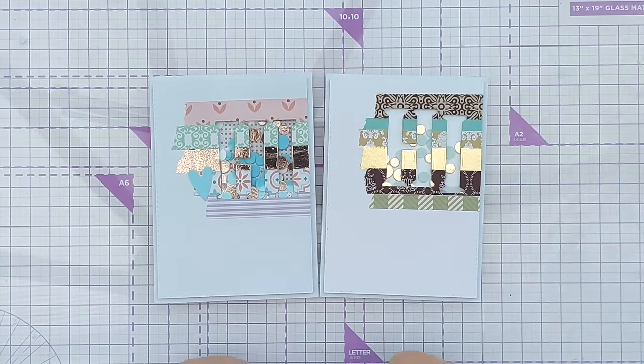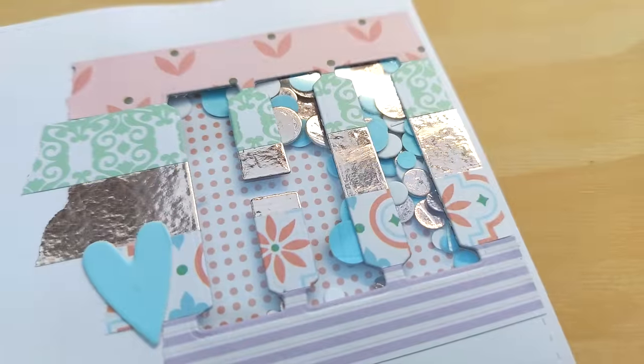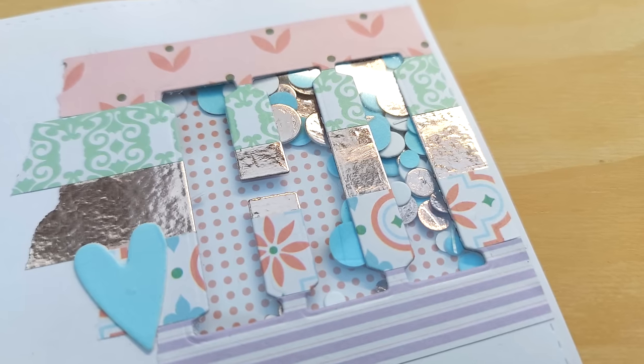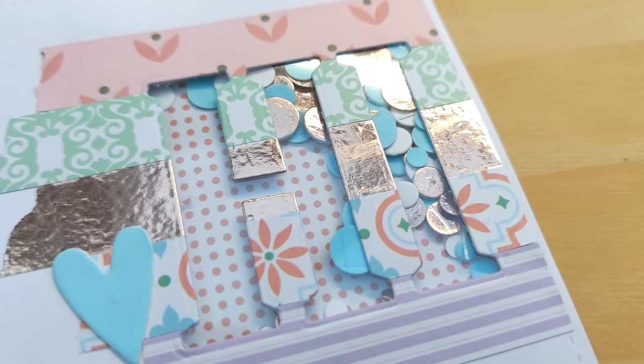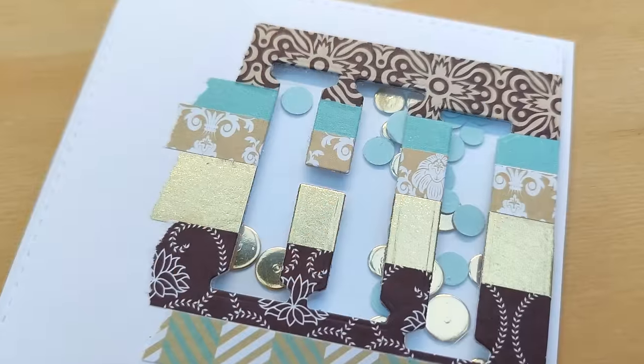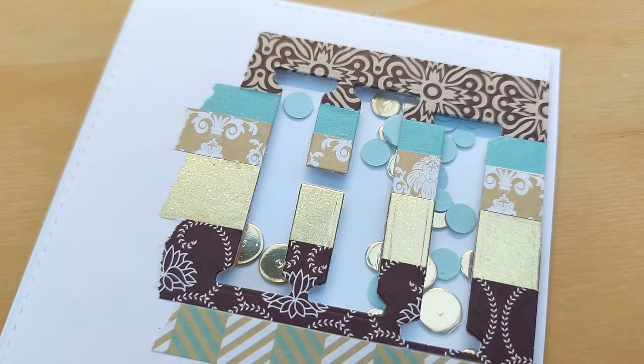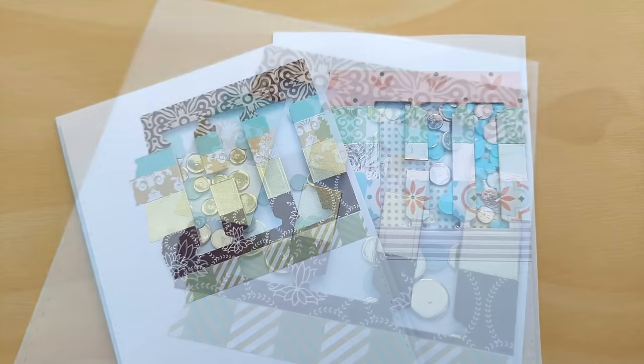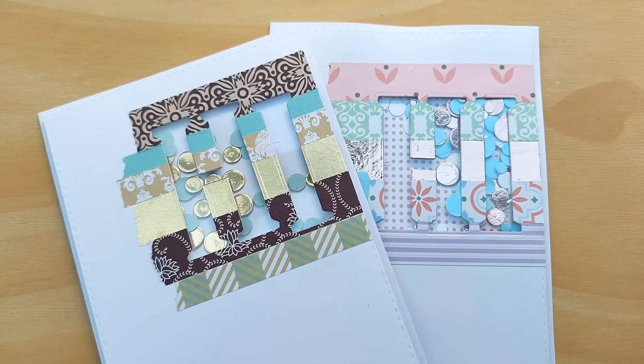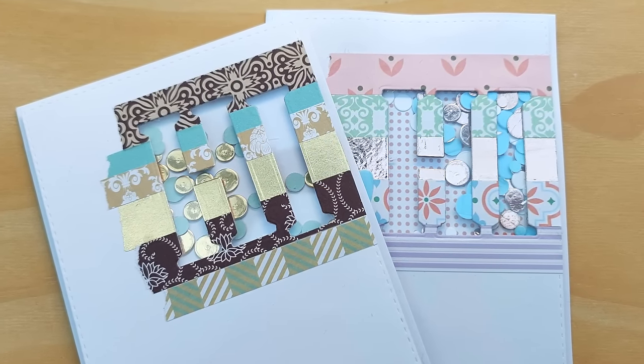But there you go. Do let me know which one of these cards you prefer. Right, I think that'll do for today. I hope you've enjoyed the video and it's given you some ideas of things you can do with washi tapes, pattern papers, alpha dies, whatever you've got in your stash. If it has, please do let me know in the comments, leave a thumbs up, subscribe and ring that notification bell. And I'll see you back here tomorrow for another video. Thanks for watching. Bye for now.